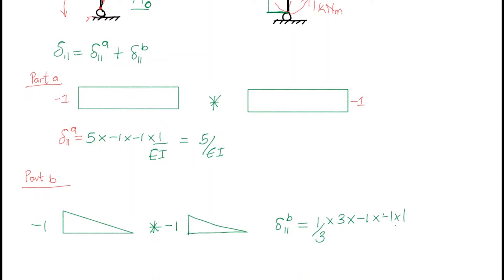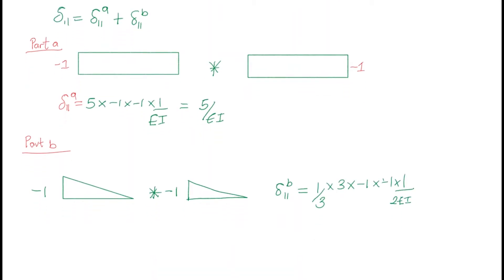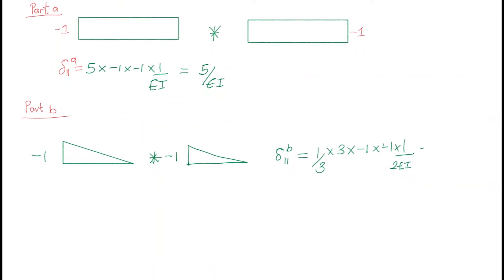Applying this to part b: delta_11b equals (1/3) times L which is 3, times i, times k which is negative one, divided by the rigidity 2EI — where 2EI was defined at the beginning of the question. This gives us 1/2 over EI, which is positive. So delta_11 equals delta_11a plus delta_11b, giving us 5 + 0.5 = 5.5 over EI.